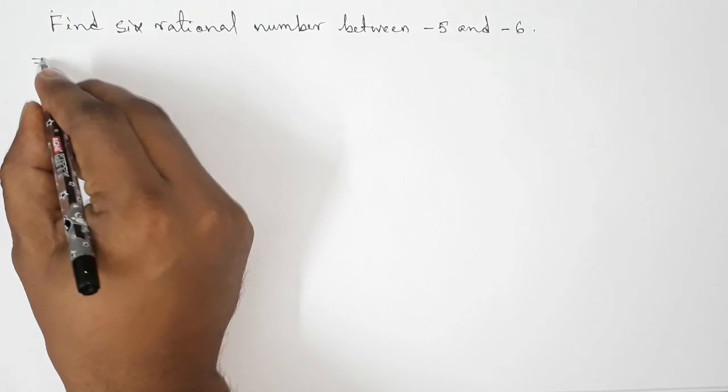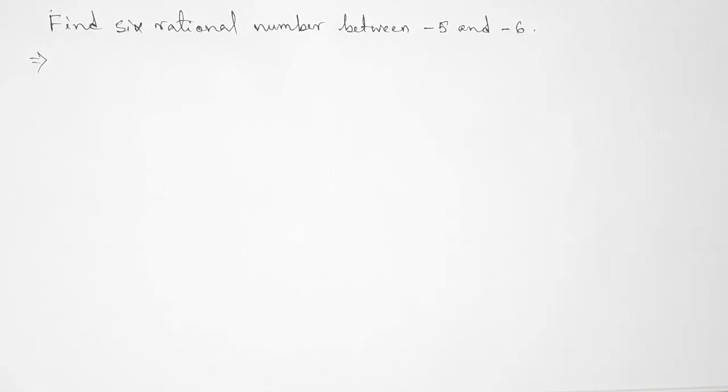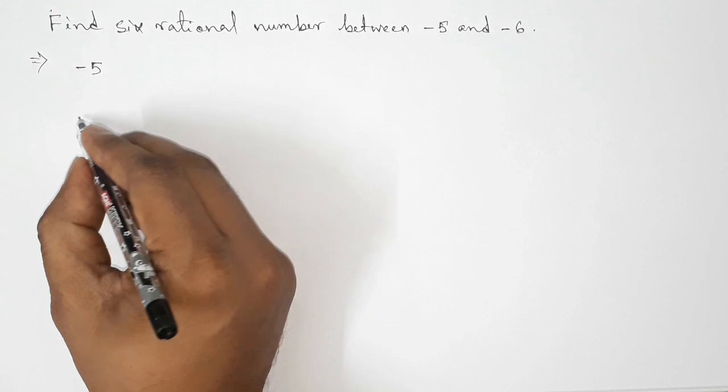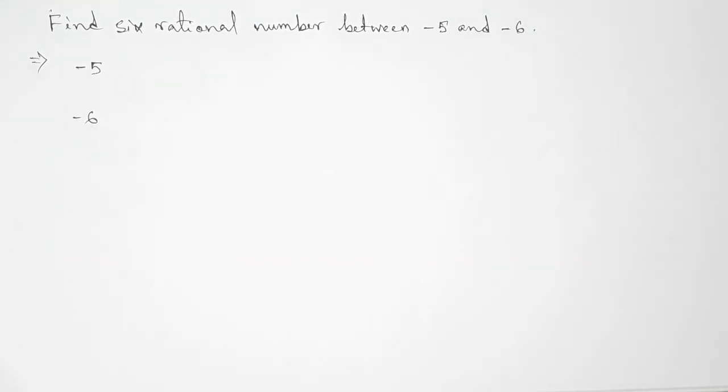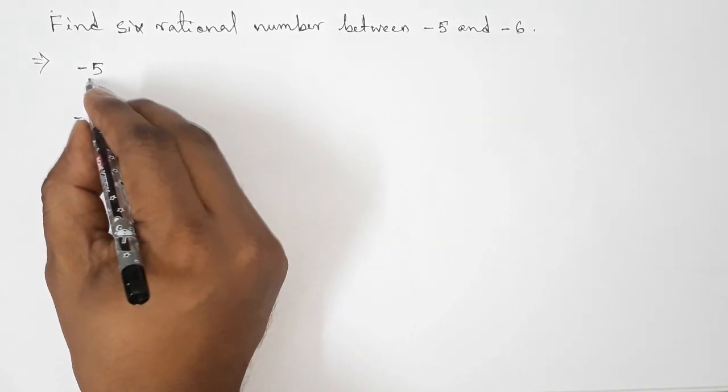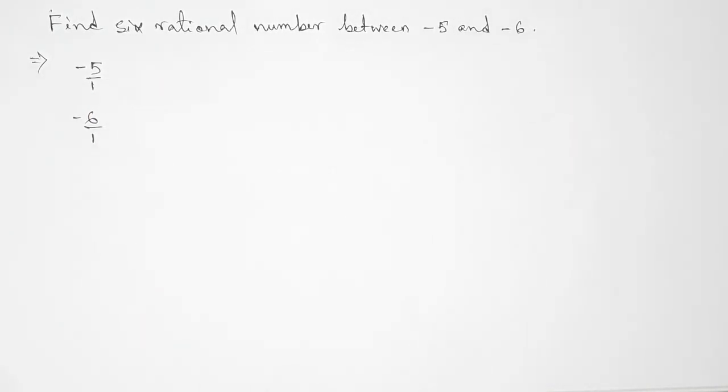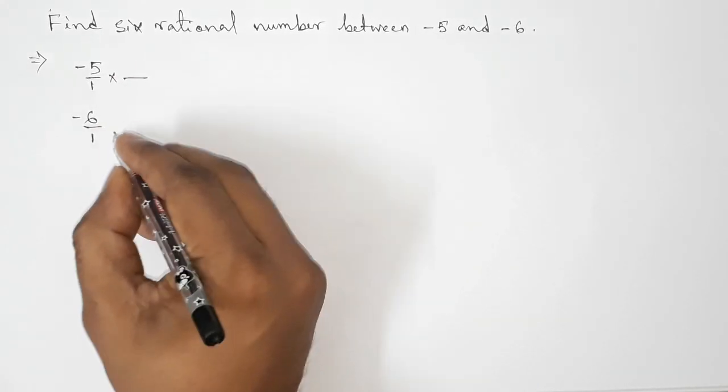First of all, let us solve this problem. So here given two negative numbers, minus five and minus six. So now we can write here minus five as minus five by one, minus six by one.